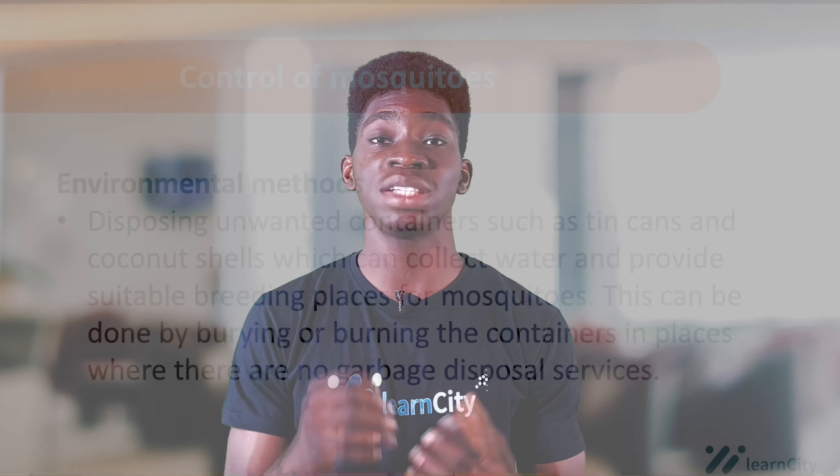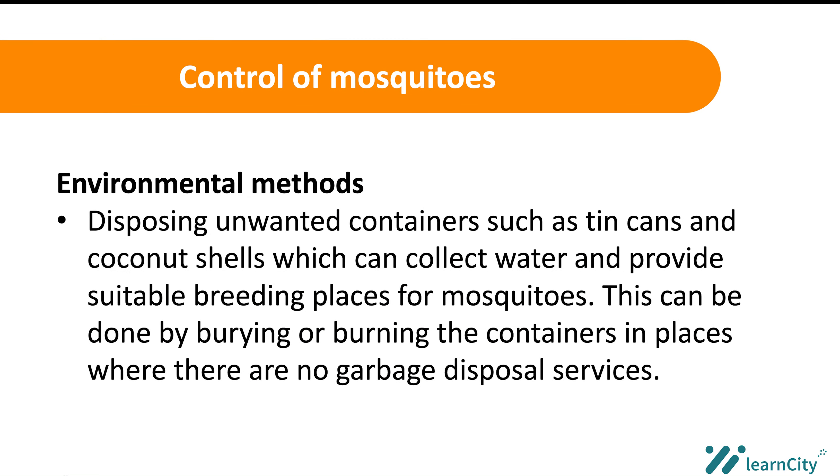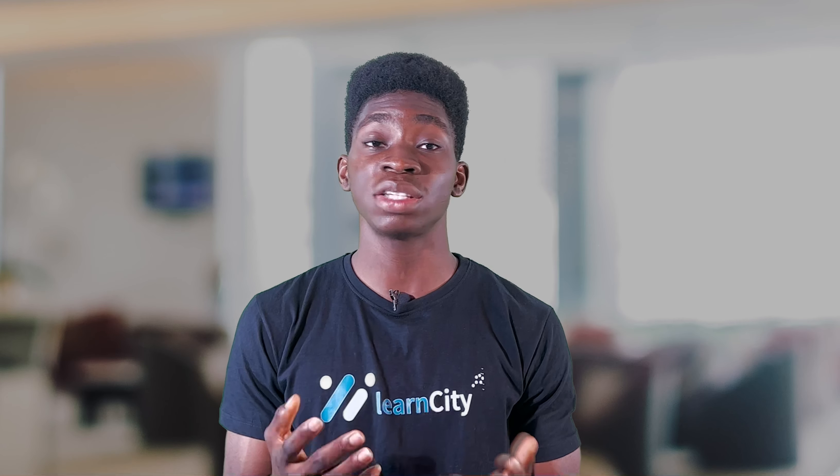Another method is disposing of unwanted containers such as tin cans and coconut shells that can collect water and provide breeding sites. We dispose of these materials — by burying or burning them where there are no garbage disposal services, or by using garbage disposal services to remove them properly.